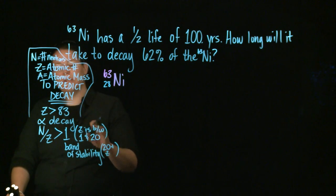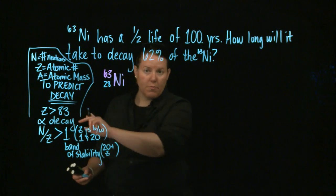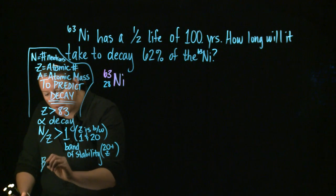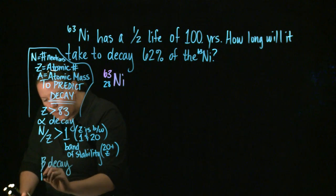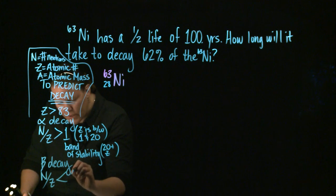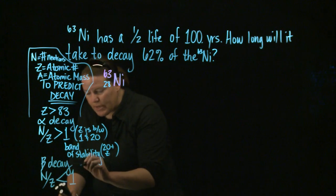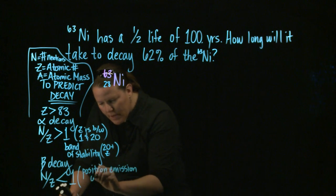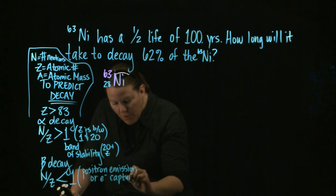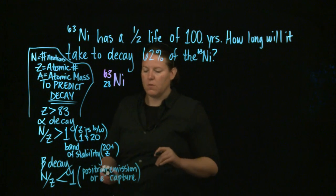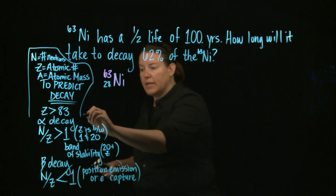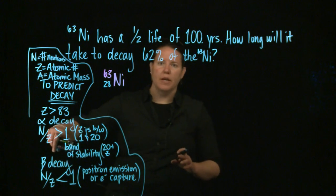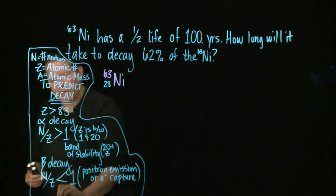So if you are basically top-heavy — meaning you have more neutrons than protons — then it's usually going to undergo beta decay. If you have the exact opposite, the N-to-Z ratio is less than one, meaning more protons than neutrons, it's going to undergo positron emission or electron capture — both of which accomplish the same thing. Positron emission and electron capture both change a proton into a neutron, whereas beta decay changes a neutron into a proton.